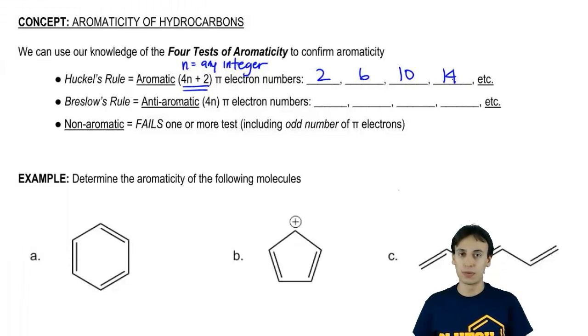These numbers are the Huckel's rule numbers and some of my students just prefer to memorize the numbers instead of 4n plus 2 because they think it's easier that way. I'm going to leave that to you. If you want to just memorize two, six, ten, fourteen instead of 4n plus 2, if that's easier for you, go for it. All I care about is that you use the right numbers on your exam.